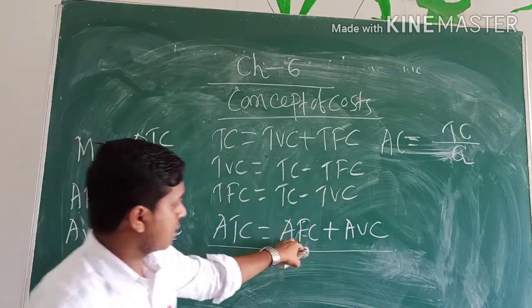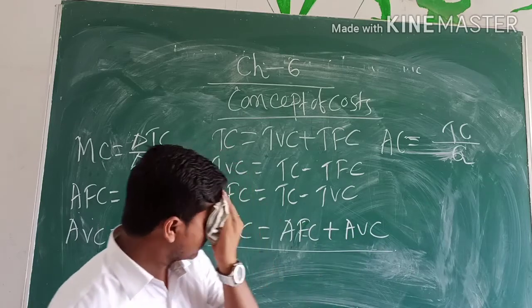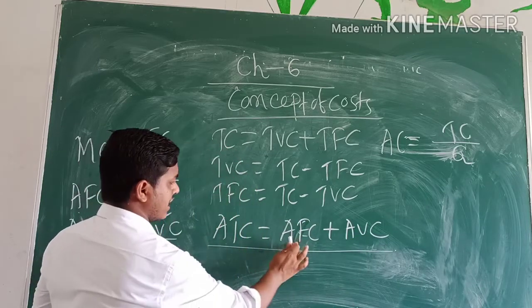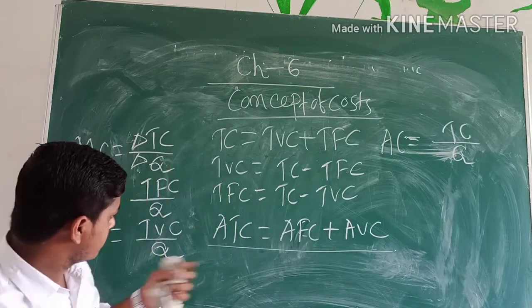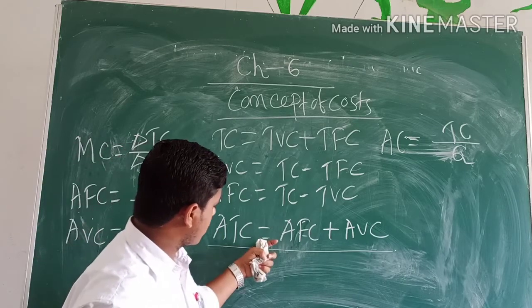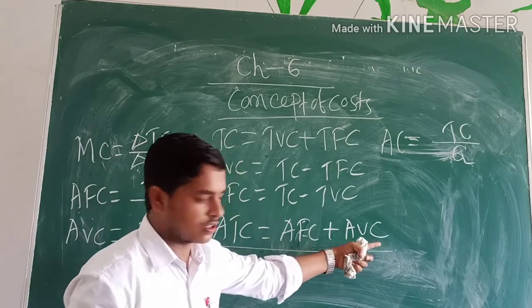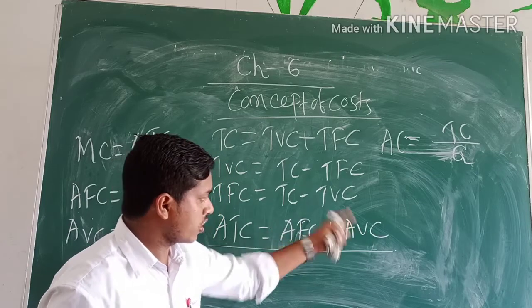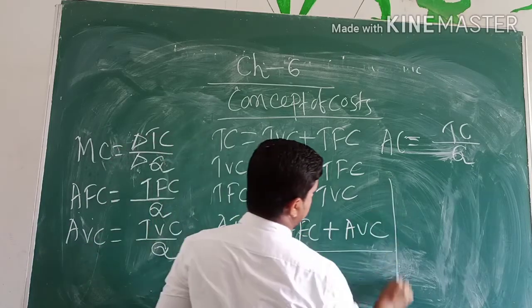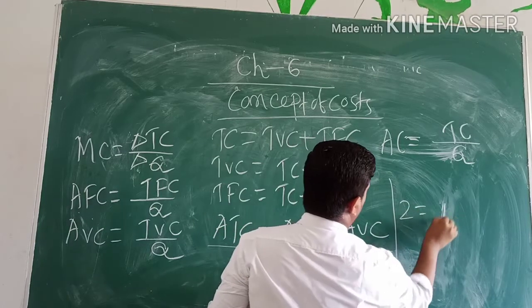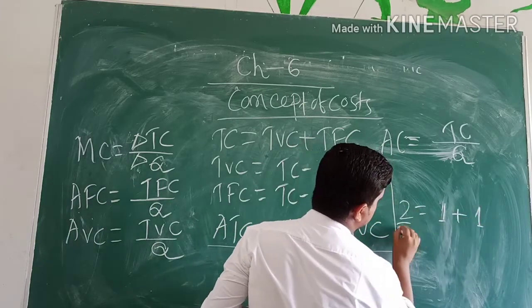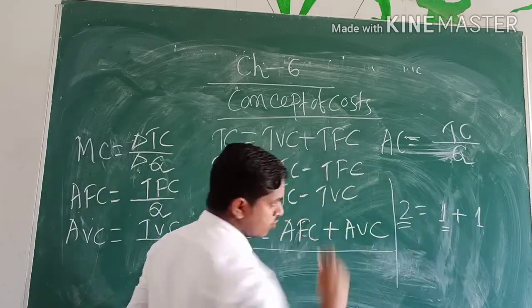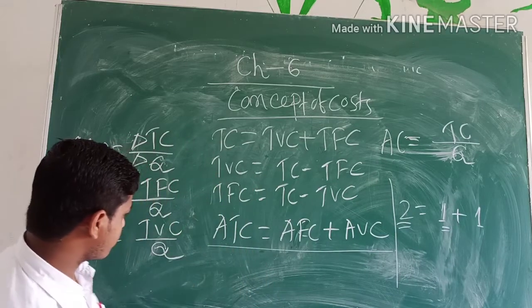Why is ATC greater than AFC or AVC? ATC is greater than AFC or AVC because ATC is the summation of AFC and AVC. So it will be greater than AFC or AVC. You can see here, 2 is equal to 1 plus 1. So 2 is greater than 1 because 2 is equal to 1 plus 1, like that.